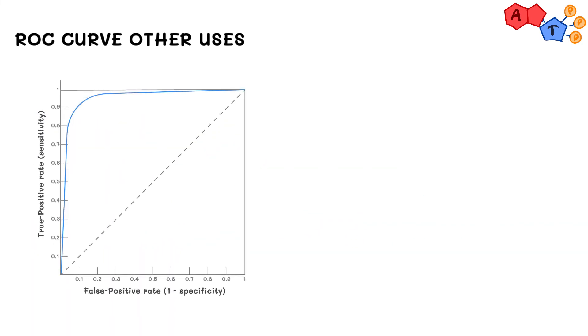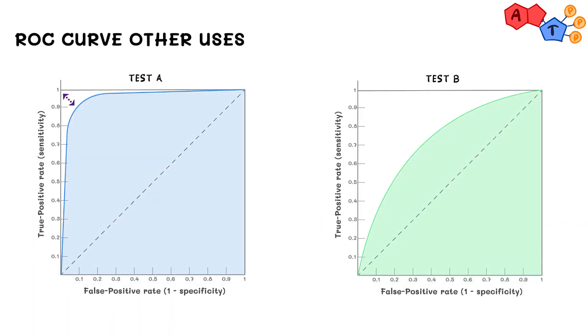A test is considered more accurate the closer it approaches the top left corner and less accurate as it approaches the diagonal line. We'll be covering accuracy and its associated terms in more detail in a future video. We just wanted to mention a few points here to help tie in a few more concepts in relation to the ROC curve.